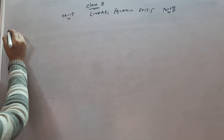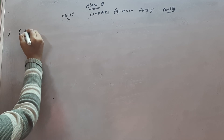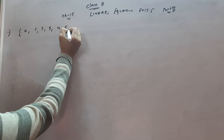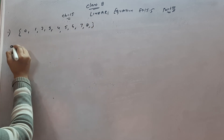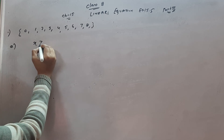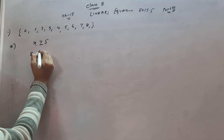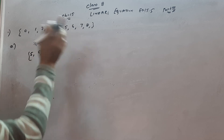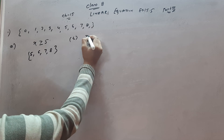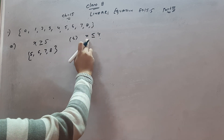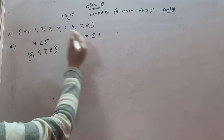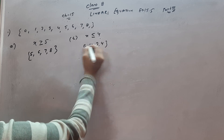Now we have come to exercise 15.5 where you need to find the solution set. The given set is {0, 1, 2, 3, 4, 5, 6, 7, 8}. Question (a): x is greater than or equal to 5. Since equals to sign is given, x can be 5 or more, so the solution set is {5, 6, 7, 8}. Question (b): x less than or equal to 4, so the solution set is {0, 1, 2, 3, 4}.